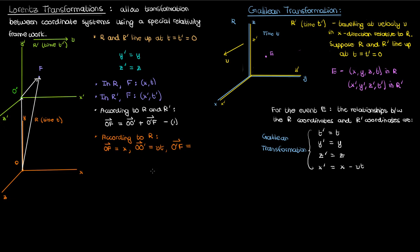That just leaves the distance o'f. Relative to r, the x coordinate of f relative to o' is x', however that x coordinate corresponds to the reference frame r', not to r. If we want to find the distance between f and o' according to the reference frame r, we'll have to use length contraction. By the principle of length contraction, the length measured between o' and f in the reference frame r is given by the proper length x' divided by the Lorentz factor gamma. So if we apply vector equation 1, then according to reference frame r, x equals vt plus x' over gamma. I'll call this equation 2.